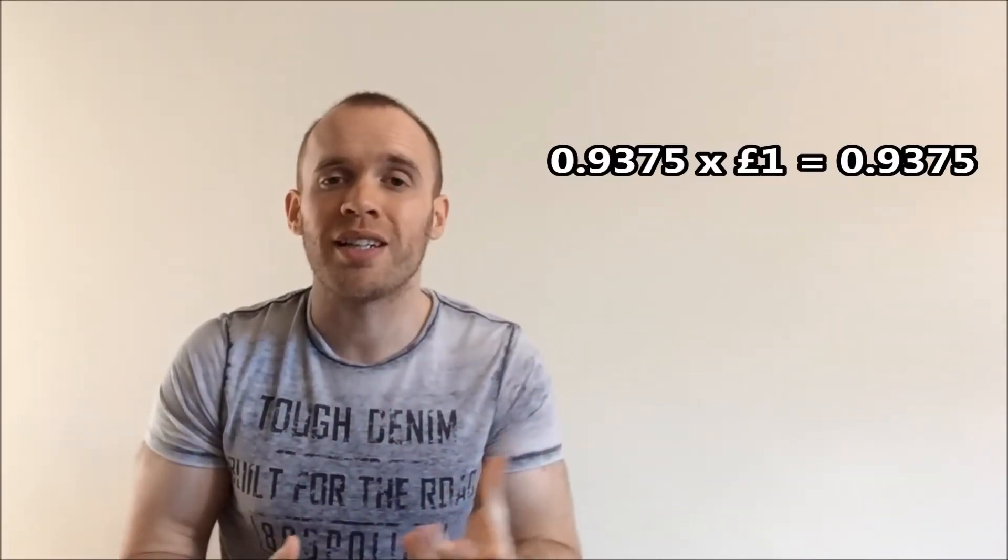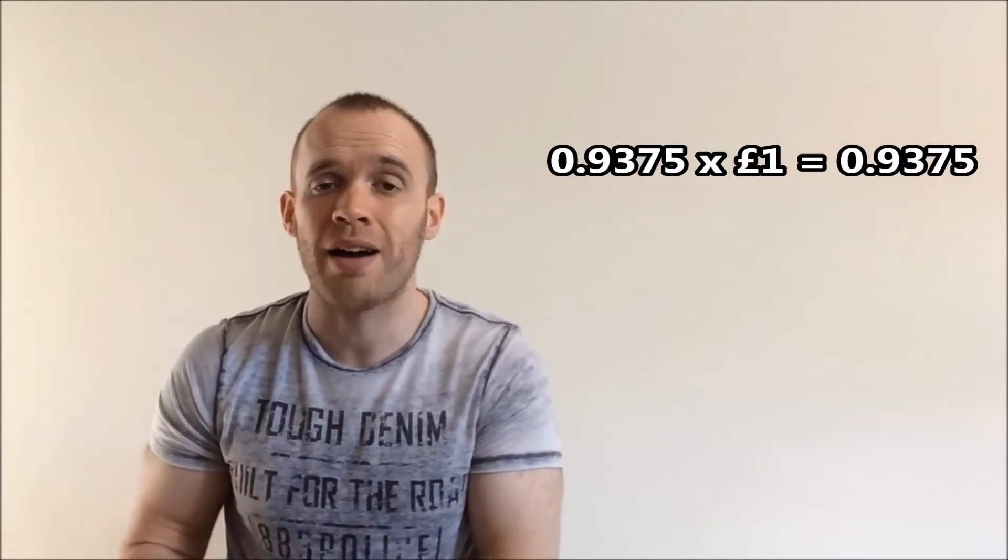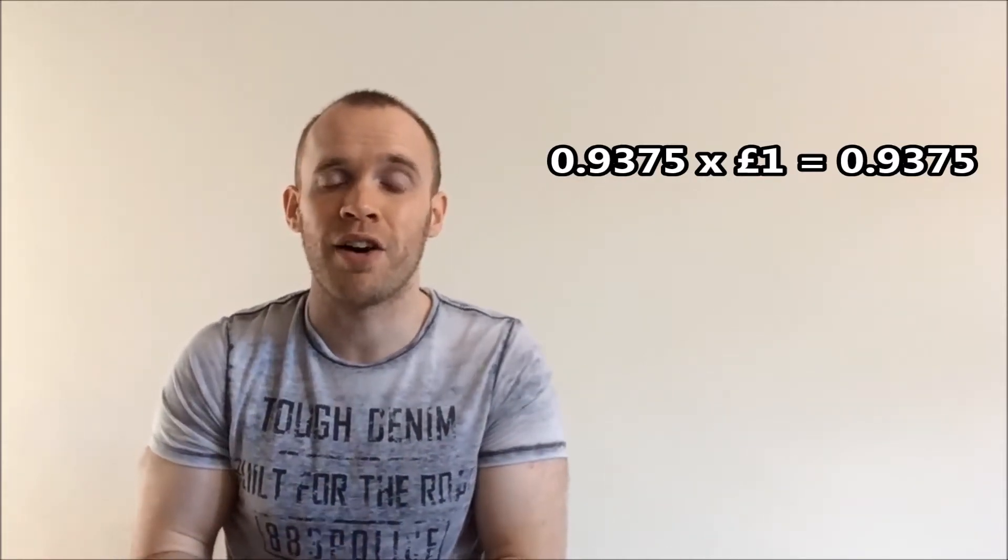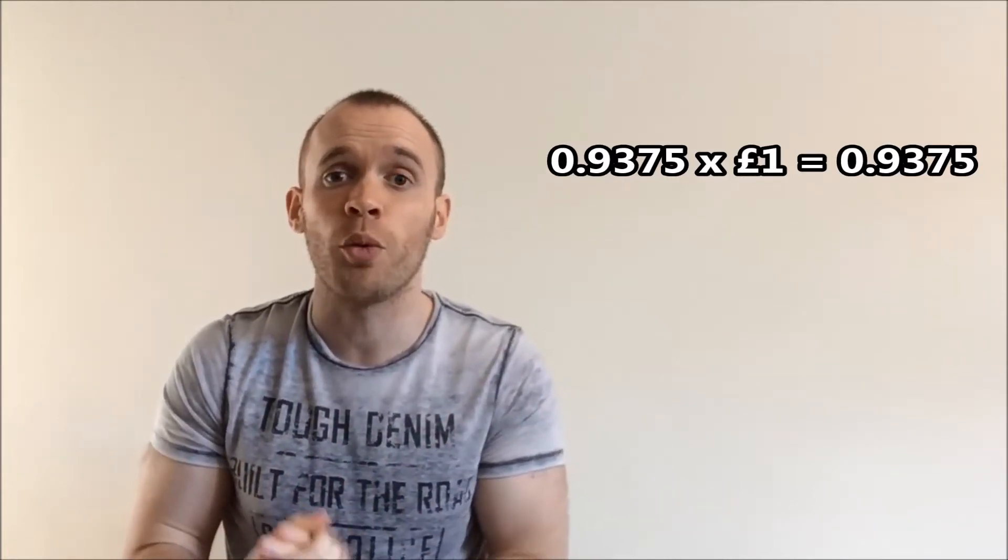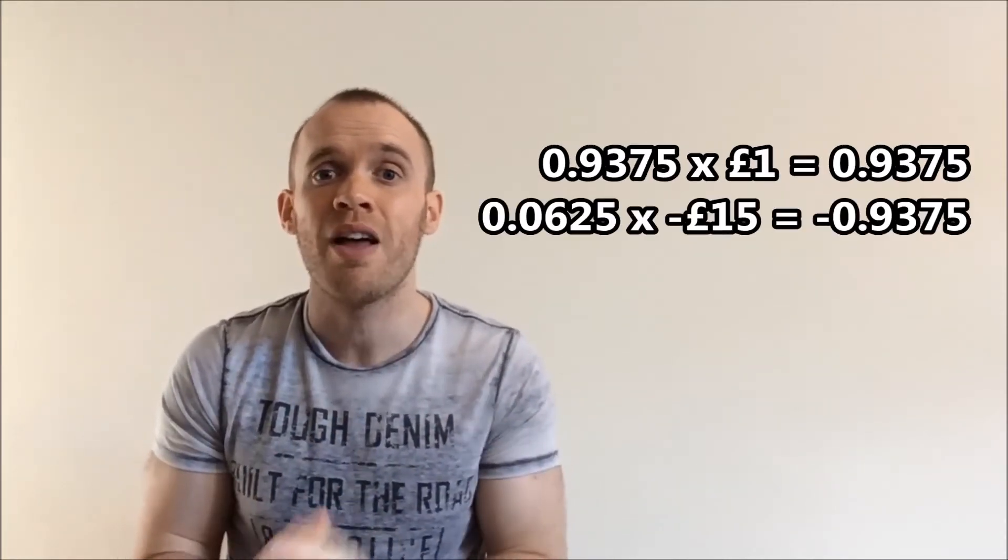Now the expected value of the game is still zero, so your 0.9375 chance of winning a pound is, you guessed it, 0.9375. And although slim, your chances of losing four in a row would leave you 15 pounds down. 15 times 0.0625 gets you the same number.